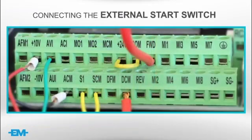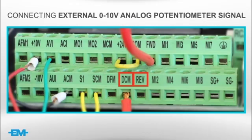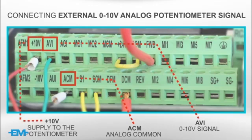Now we will show you how to connect the external start switch. You will use the following two terminals: DCM, which is your digital common, and FWD, which is your forward start command, or REV for reverse start command. To connect an external 0 to 10 volt analog potentiometer signal, use ACM, AVI, and plus 10 volt. This is not necessary if you have a direct 0 to 10 volt source.